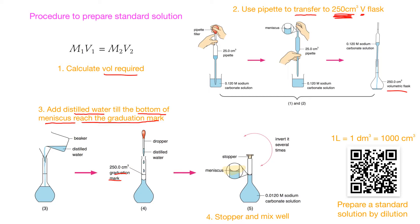What we need to do next is stopper the flask and then mix it well. This is basically the process to prepare a standard solution. We want to remind you that one liter equals 1000 cm³, which is also equals to 1 dm³. Some foreign countries try to use liters instead of dm³, but actually it is the same.